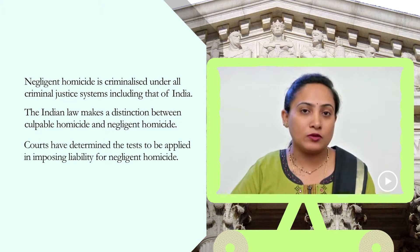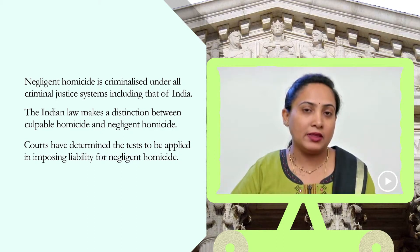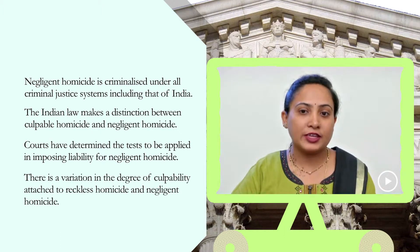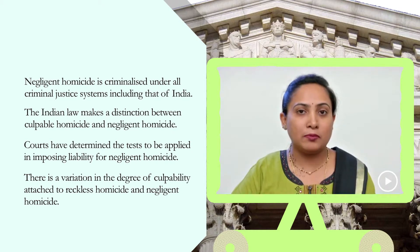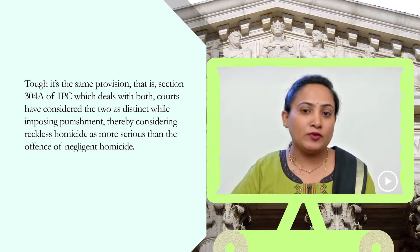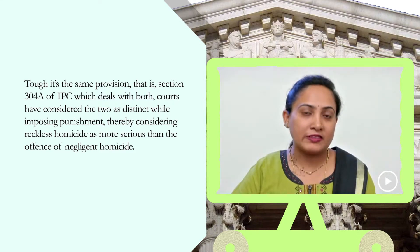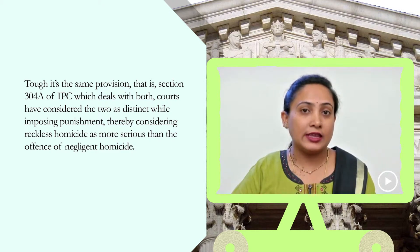The courts have also determined various tests that need to be applicable in order to determine the application of Section 304A for an alleged offense of negligent homicide. In fact, there is a variation in the degree of culpability attached by the law to reckless homicide, negligent homicide, and culpable homicide. Though it is the same provision — Section 304A — which applies both for reckless homicide as well as negligent homicide, there is a variation in the degree of liability attached for the two.